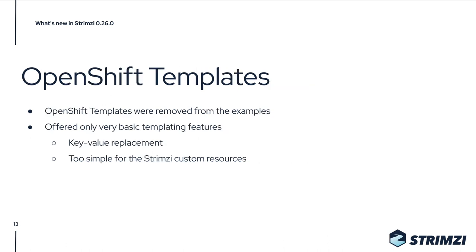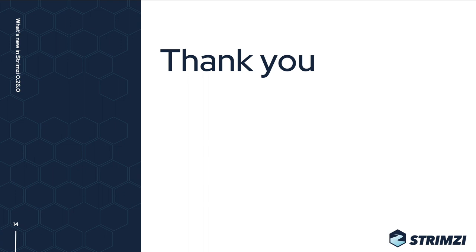One thing we removed is the OpenShift templates. These were part of the examples but offered only very basic templating — essentially just key-value replacements — and were too simple for Strimzi custom resources which can be complex, so we didn't see the value in keeping and maintaining them. That's the main changes in the Strimzi 0.26 release; I hope we have some features you were waiting for and that you'll upgrade soon.